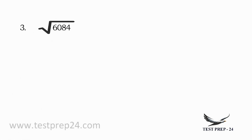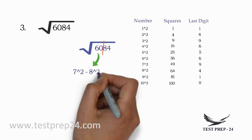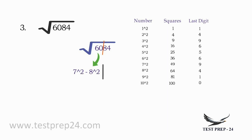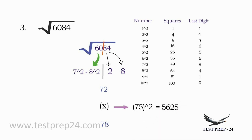Next question: what is the square root of 6084? Divide into two parts: 60 and 84. 60 lies between 7 square and 8 square, so the first digit is 7. The last digit of 84 is 4, which gives possibilities of 2 or 8 — answer is either 72 or 78. Take the in-between number 75: 7 × 8 = 56, so 75 square is 5625. Since 6084 is greater than 5625, the answer is 78.